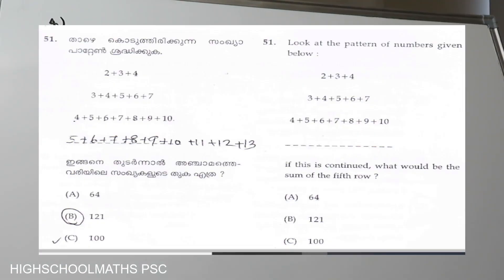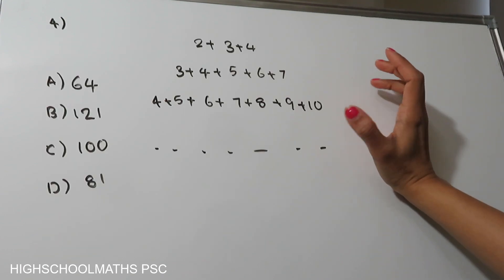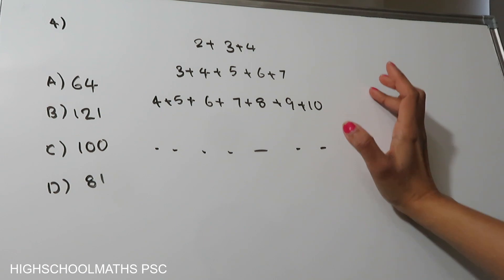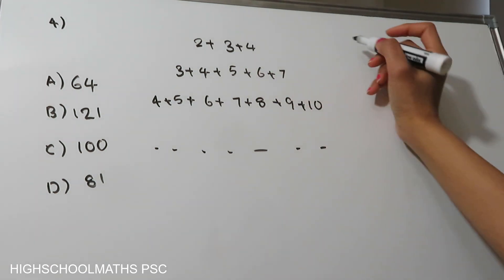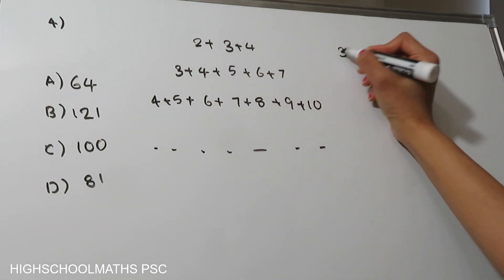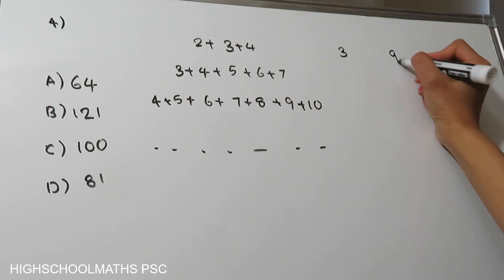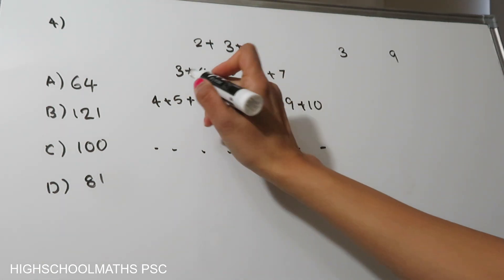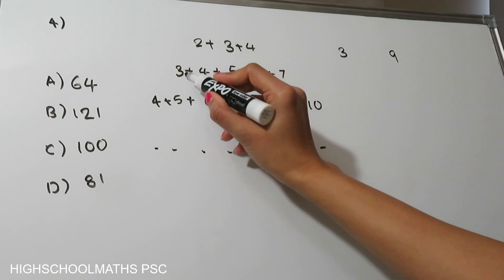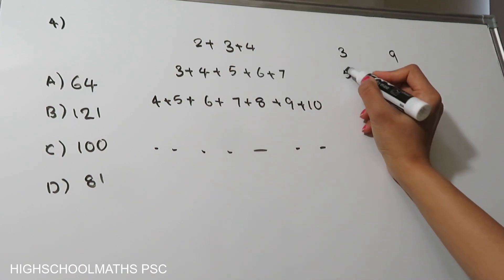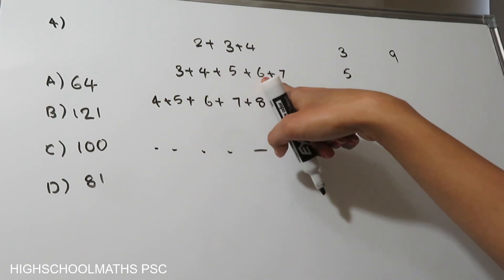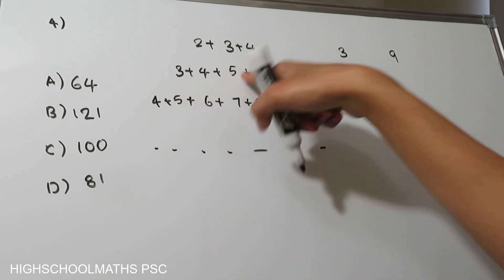Look at the pattern of numbers given below. If this is continued, what would be the sum of the fifth row? If you cut the pattern, you can see the pattern of the 5th row. If you look at the first row, the 3rd row. This is the 3rd row. 4 plus 3 is 7 plus 10 is 9. Now 1, 2, 3, 4, 5. 5 is equal to 6. 6 plus 4, 7 plus 3, 8 plus 10. Now, 20 is equal to 25.